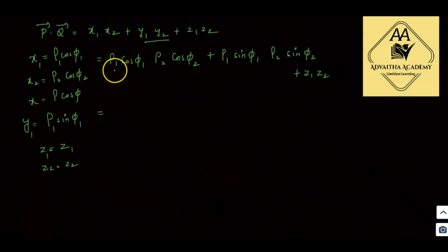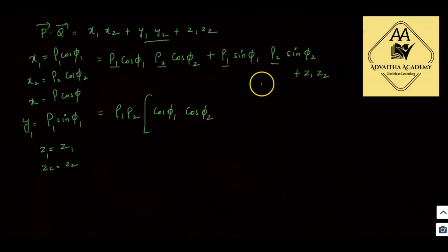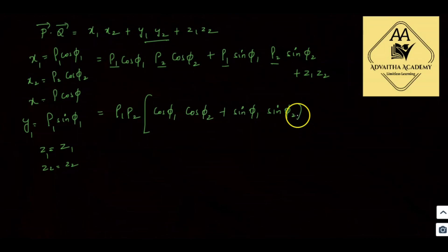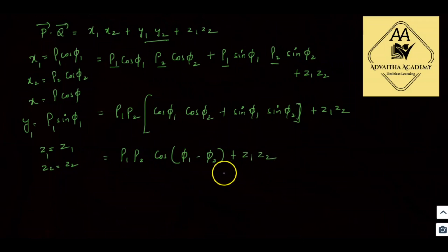So the first term is rho1·rho2·cos(phi1)·cos(phi2) plus further cosine terms, ultimately giving rho1·rho2·cos(phi1 minus phi2) plus z1·z2.